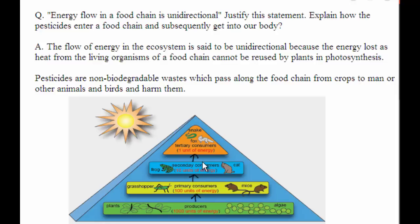When pesticides are used for the plants, the plants absorb these pesticides. When the primary consumers consume the producers, it enters through the food chain and causes harm to man and other animals and birds.